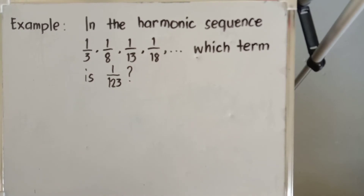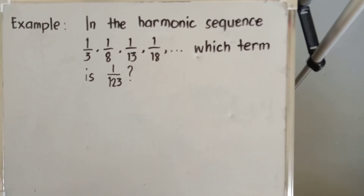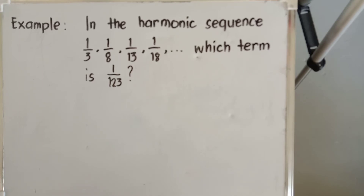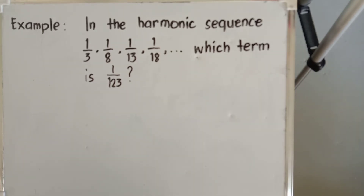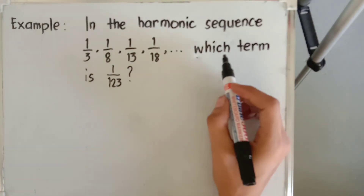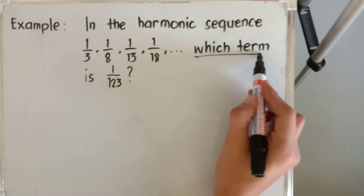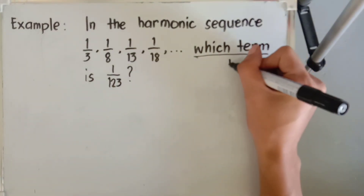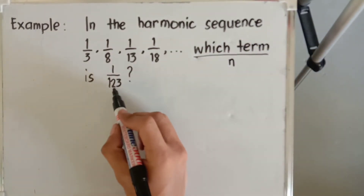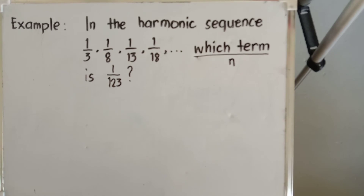Let us proceed to the last example about harmonic sequence. In the harmonic sequence one-third, one over eight, one over thirteen, one over eighteen, and so on, which term is one over one hundred twenty-three? From what is asked, we are looking for the term position n of the given term one over one hundred twenty-three.